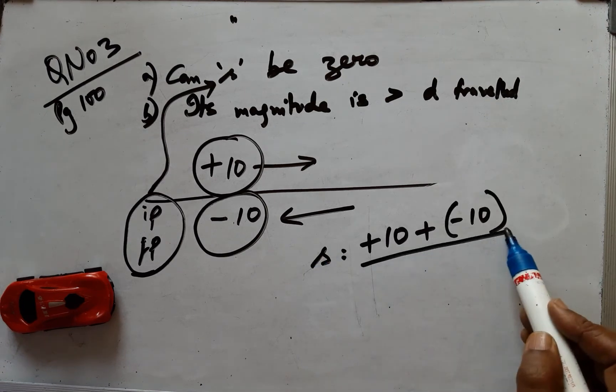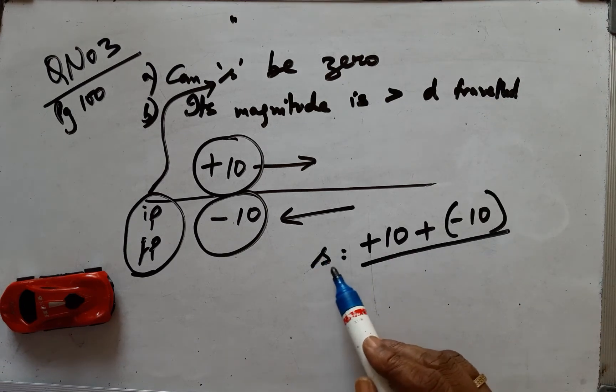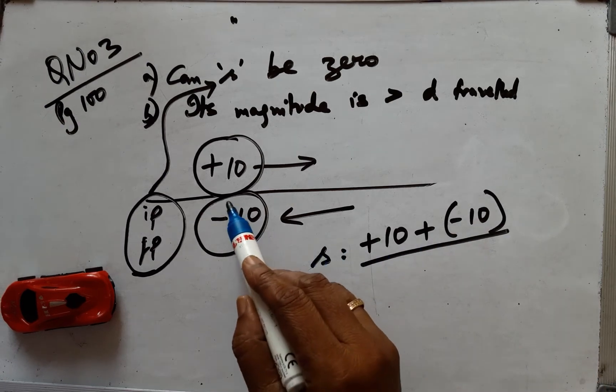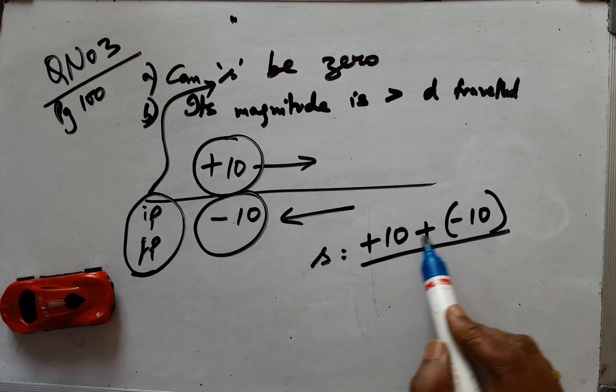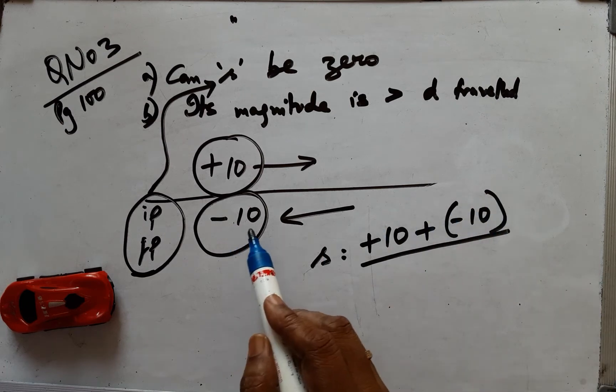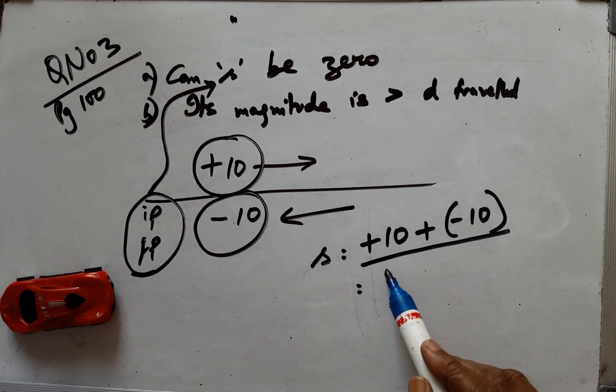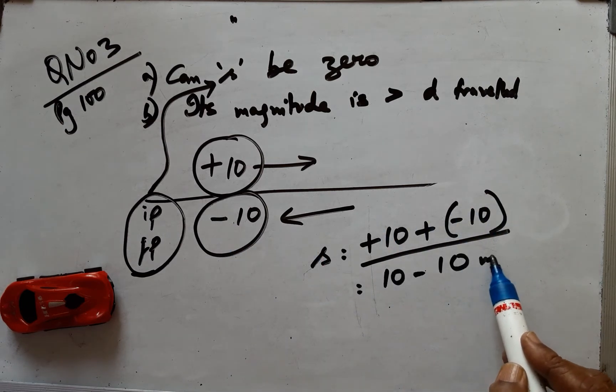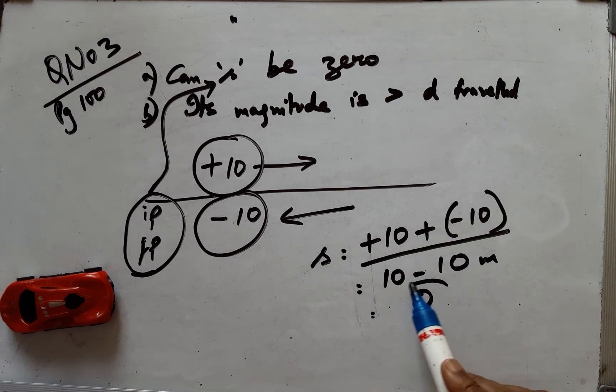So the sum of the distances covered would be inclusive of the sign here. The sum is 10 plus minus 10 because going left is minus 10. Therefore, this equals zero. Hence, displacement is zero in the first case.